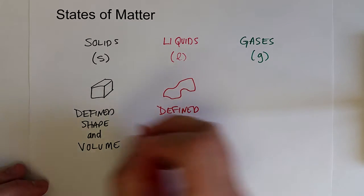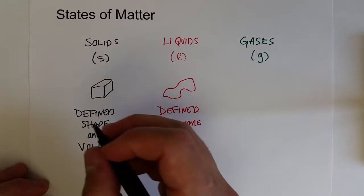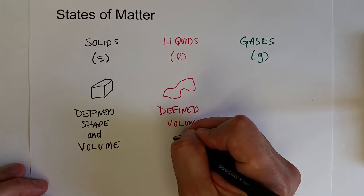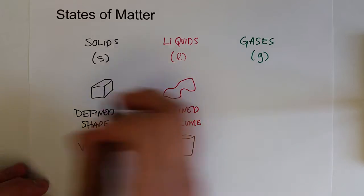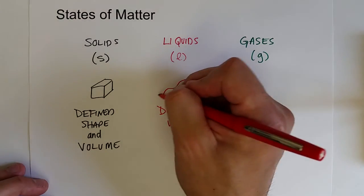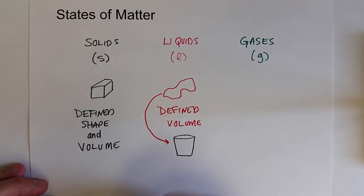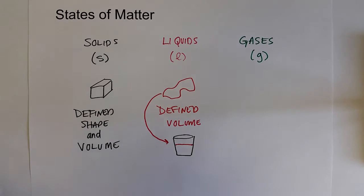They take the shape of their container. So if you were to pour this liquid into the container, it would take the shape of the container, have the same volume.